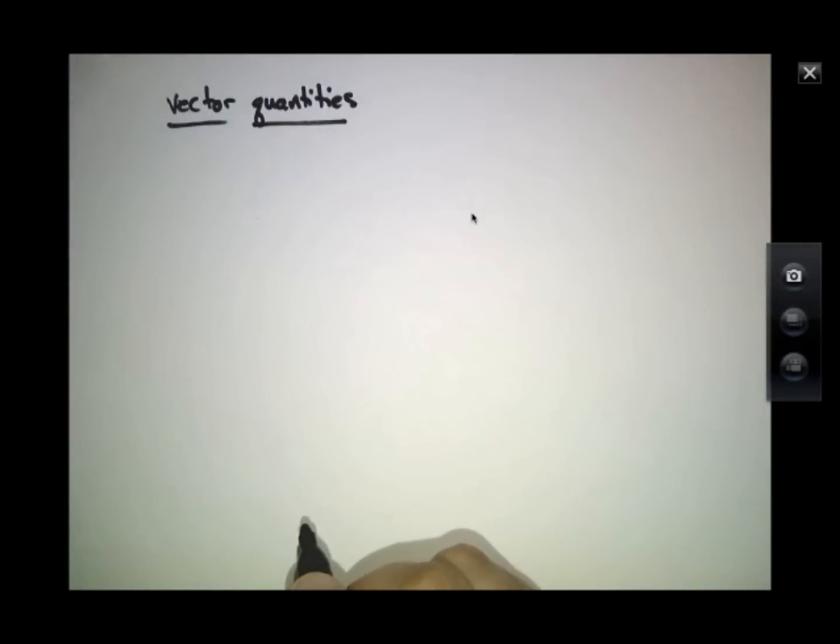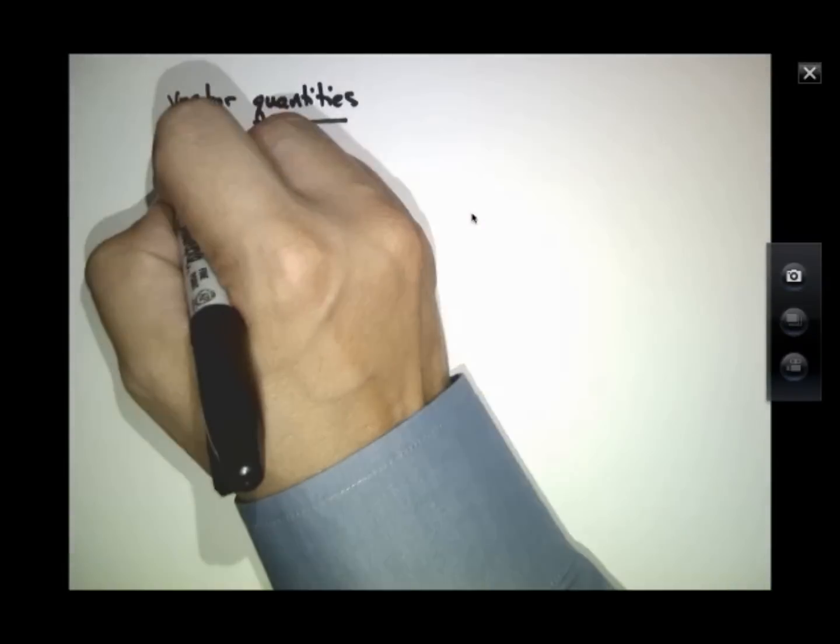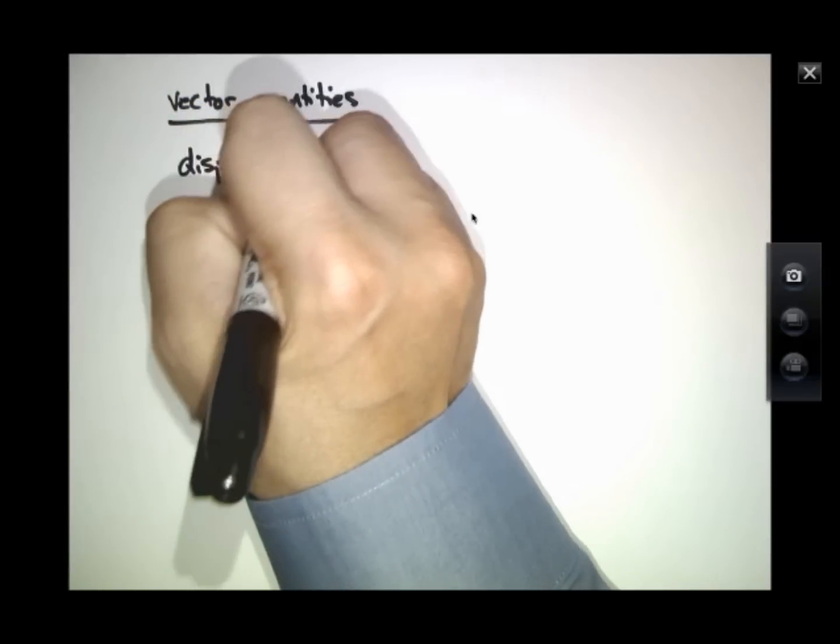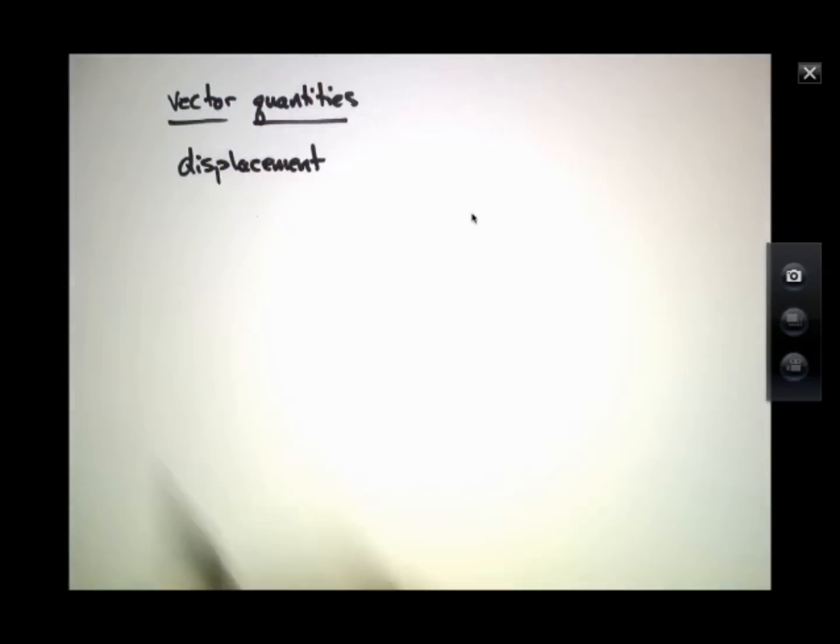There are lots of things that are characterized by a vector. For example, displacement. Displacement means I walked 3 meters. It matters whether I walked that 3 meters north, south, east, or west.